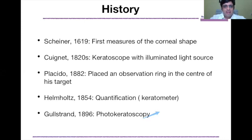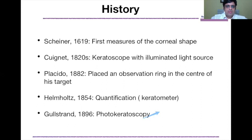The glass sphere whose image most closely resembled the patient's cornea in terms of size and shape was considered to be similar to the cornea — giving a rough keratometric value. This was improved by Quignet in 1820 using a keratoscope with an illuminated light source, though he did not account for how to view changes on the corneal surface. Placido in 1882 introduced the famous Placido ring, placing an observation ring at the center so he could view the image formed on the patient's eye. However, actual keratometric values were not assigned until Von Helmholtz introduced the basic keratometer for quantification, and Gullstrand later introduced photokeratoscopy for photographic documentation.